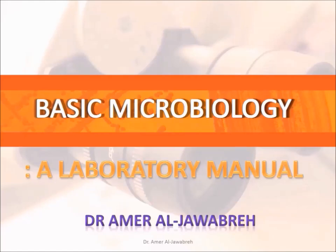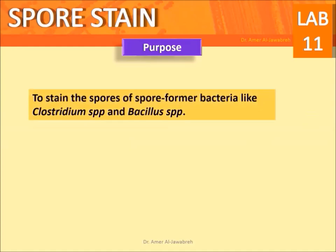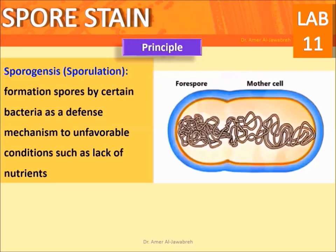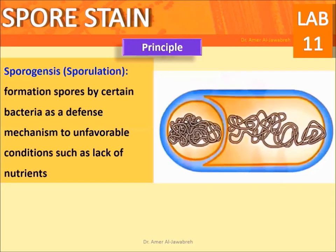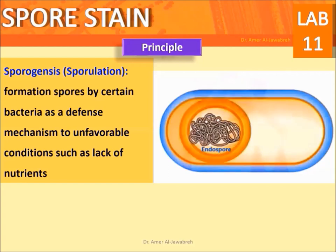Basic Microbiology: A Laboratory Manual — Spore Stain, Schaefer-Fulton Method. This is a differential stain. Purpose: to stain the spores of spore-forming bacteria like Clostridium species and Bacillus species, to differentiate spores from vegetative cells, and to differentiate spore-forming from non-spore-forming bacteria. Principle: sporogenesis, or sporulation, is the formation of spores by certain bacteria as a defense mechanism to unfavorable conditions such as lack of nutrients.